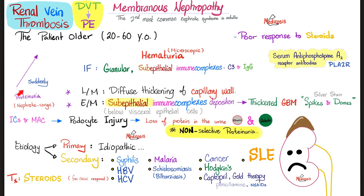Membranous nephropathy usually happens suddenly if it's idiopathic, or it can happen secondary to other diseases. What kind of diseases? Syphilis, malaria, schistosomiasis, hepatitis B, hepatitis C, cancers, Hodgkin's, captopril, gold therapy, penicillamine, non-steroidals — these are your medications — and never ever forget lupus. Lupus can hammer your kidney. Lupus can cause a nephrotic syndrome such as membranous nephropathy, or a nephritic syndrome, as we will discuss later.